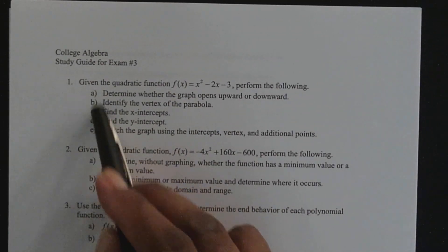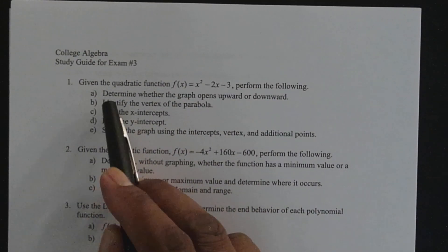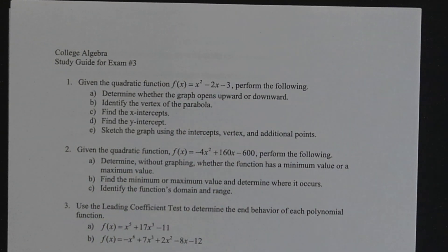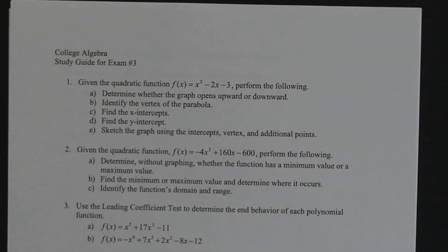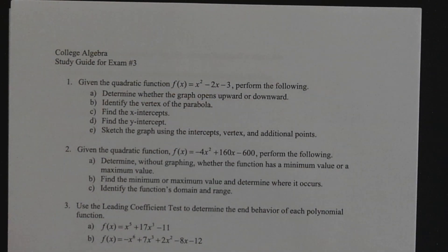It's going to be laid out like this: in part a, determine whether the graph opens upward or downward; part b, identify the vertex of the parabola; part c, find the x-intercepts; part d, find the y-intercepts; and part e, sketch the graph using the intercepts, vertex, and additional points.